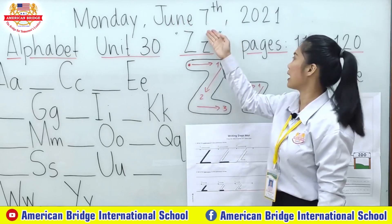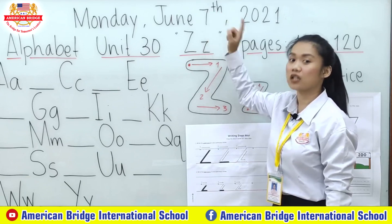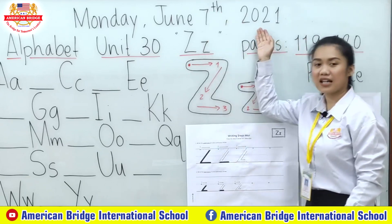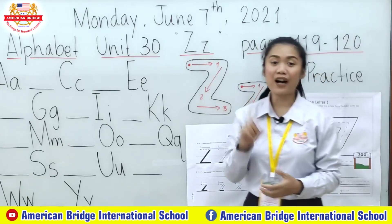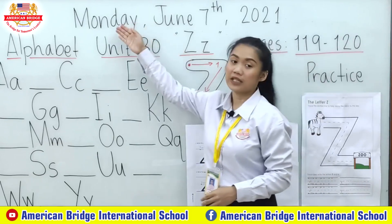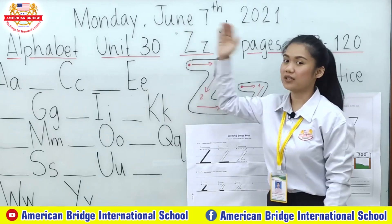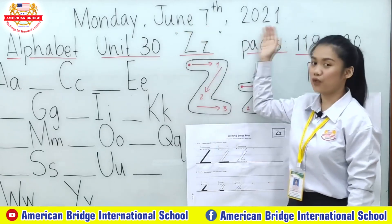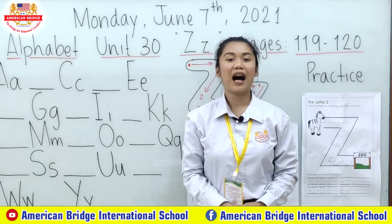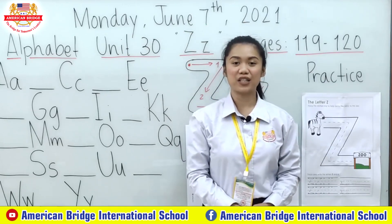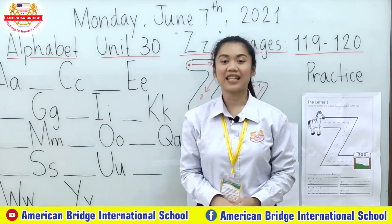Seven — correct! And we have two letters T and H on top. Very good everyone. And the year is 2021. Now let's read one more time, repeat after teacher: Monday, June 7, 2021. So every Monday we study what alphabet? Very good! For our first session we are going to talk about alphabet letters.